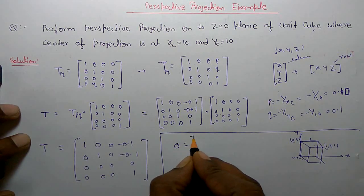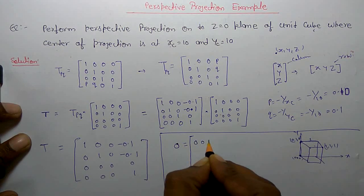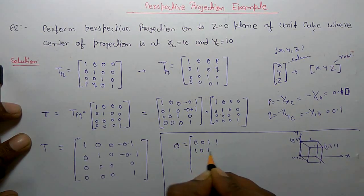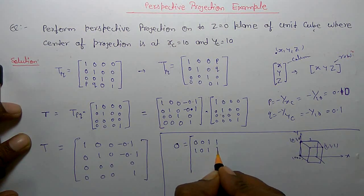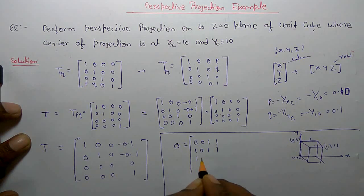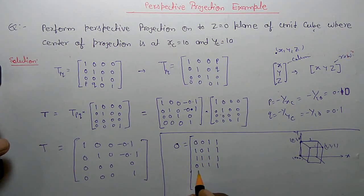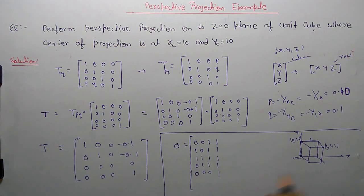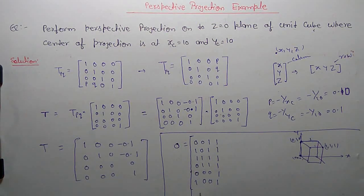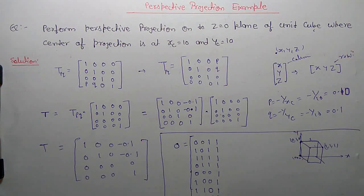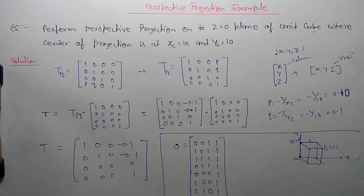Represent the unit cube matrix in homogeneous coordinates. The eight vertices are: (0,0,0,1), (0,1,0,1), (1,1,0,1), (1,0,0,1), (0,0,1,1), (0,1,1,1), (1,1,1,1), (1,0,1,1). This is the object matrix with all eight vertices represented in row measure order.